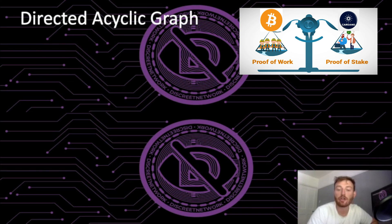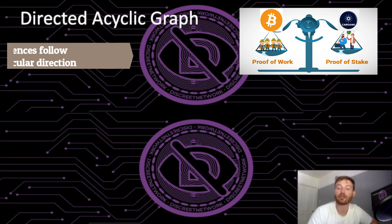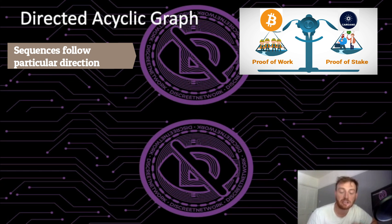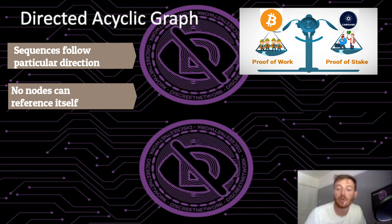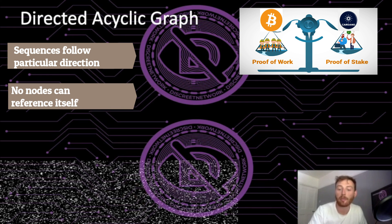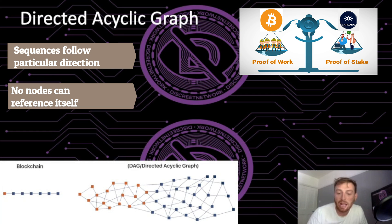Let's break this down. 'Directed' means that the transaction sequences, though not linear in nature, follow a particular direction on a plot if charted. 'Acyclic' is probably the most important term — it means there's no cycling backwards; no nodes can reference itself or be its own parent node. 'Graph' means the interlaced network forms a graphite topology in which nodes are connected to other nodes.